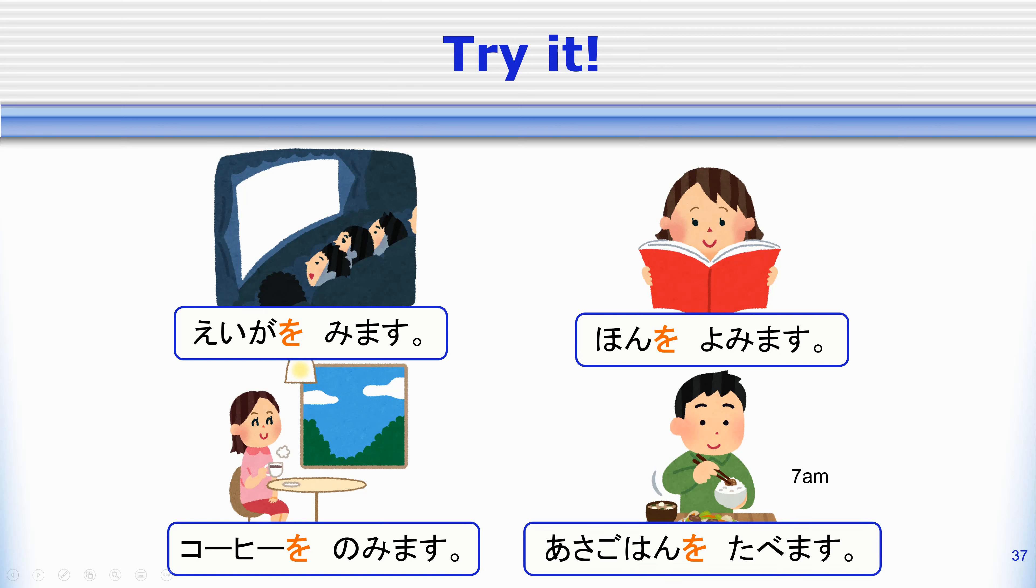Once again we use the O to mark what we are doing something to. We are going to watch. What are we watching? A movie. We read. What are we reading? A book. We drink. What are we drinking? Coffee. We eat. What are we eating? Breakfast.